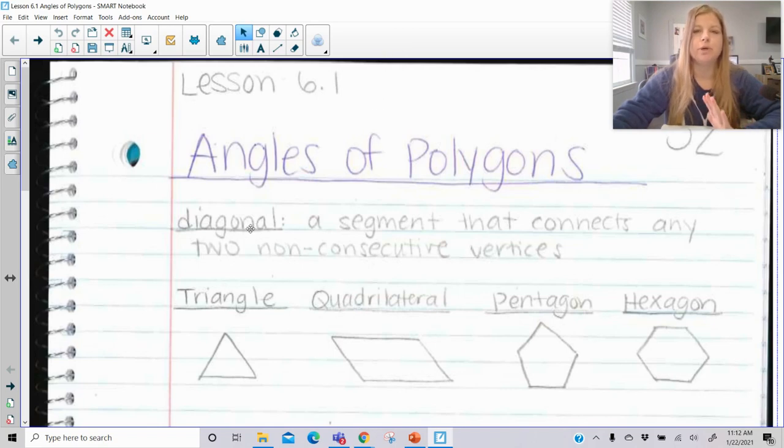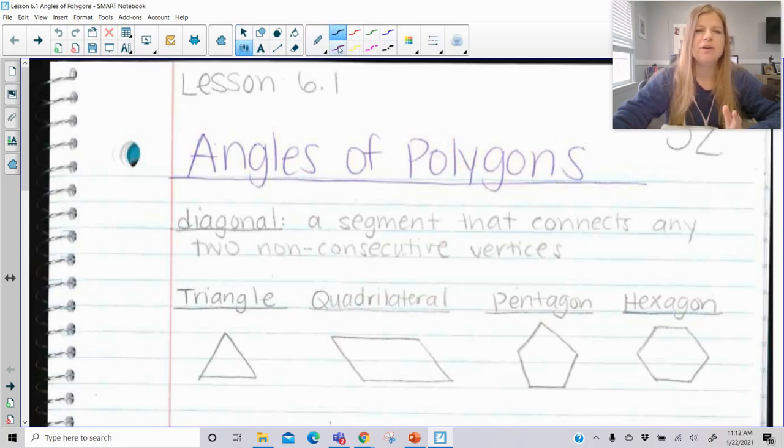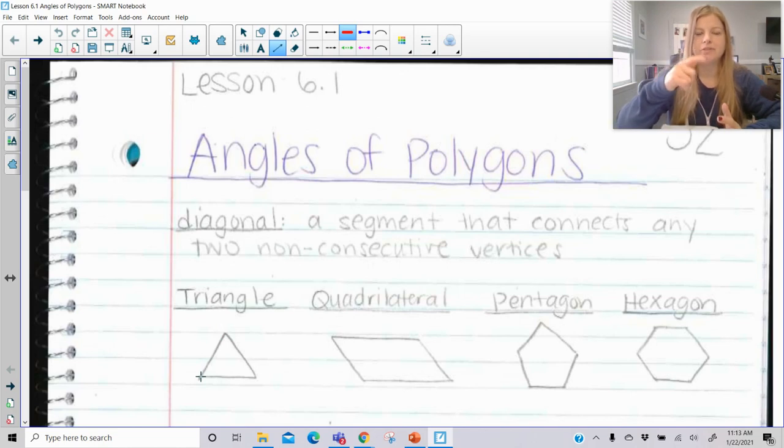So first of all, a diagonal. The word diagonal is a segment that connects any two non-consecutive vertices. And we should know that non-consecutive means that they're not one after another. So when I look at a triangle, if I go to any vertex of a triangle and I try to connect it to any of the other vertices, they're consecutive because they're one after another, they're touching. It's a side. That's not considered a diagonal. So a triangle has no diagonals in it.